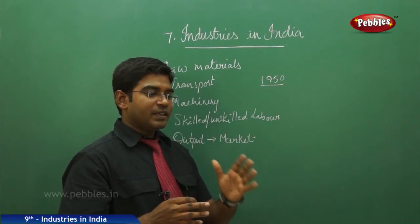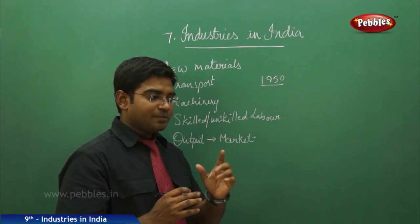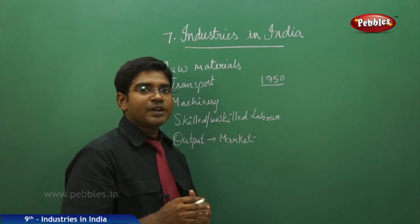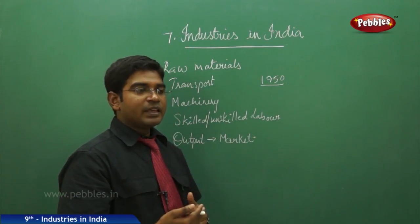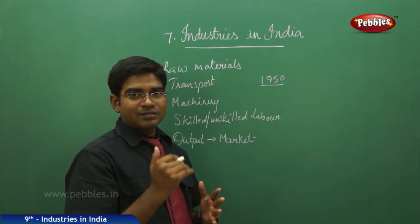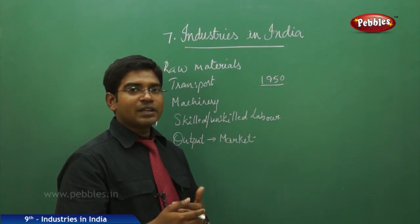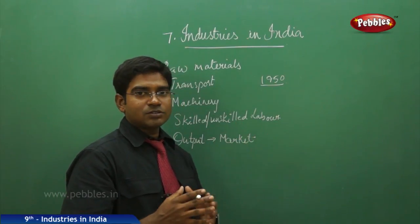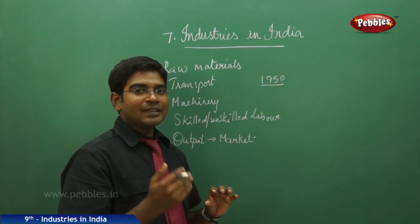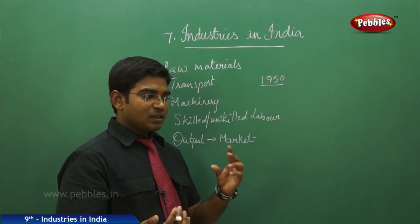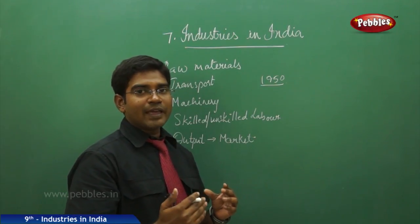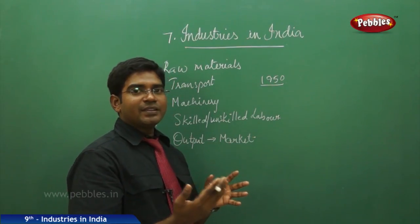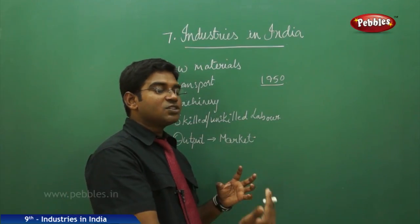The Second Five-Year Plan kept the main target of initiating industrial sector development. In industries, we have various types: small-scale industries, medium-scale industries, and large-scale industries. Small-scale industries involve investments of less than 5 lakh rupees, medium-scale from 5 to 25 lakhs, and large-scale from 25 lakhs to 1 crore. These categories divide industries into different groups.